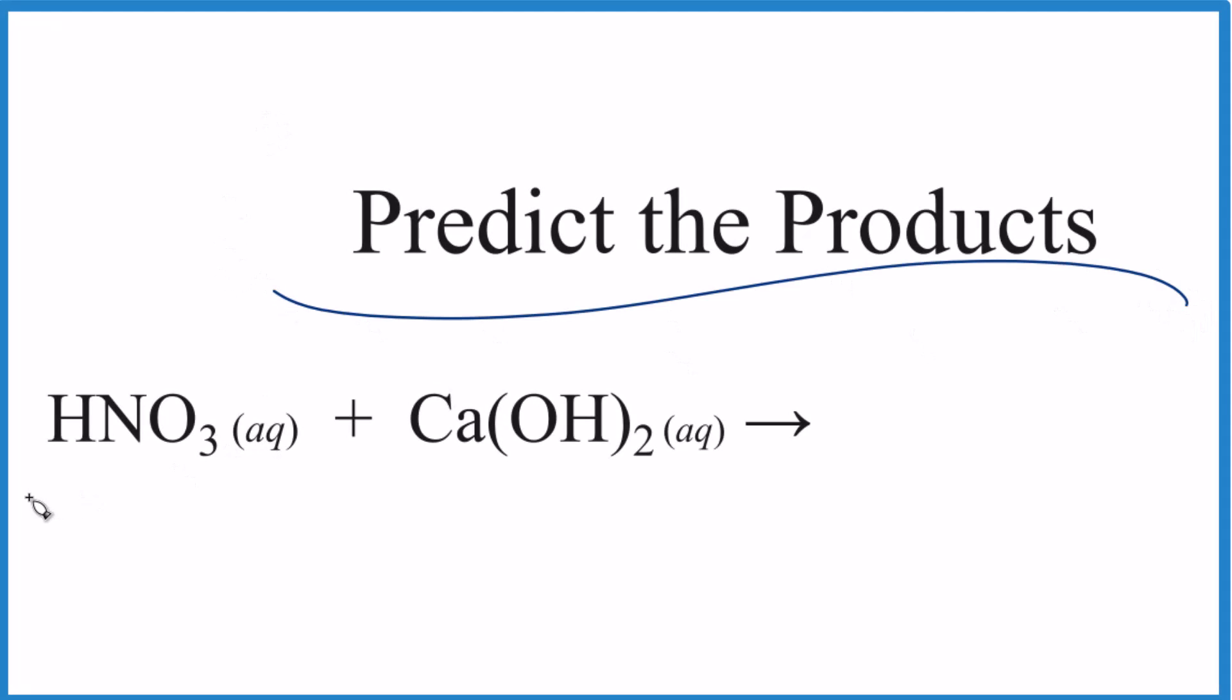Let's predict the products of HNO3 plus Ca(OH)2, nitric acid and calcium hydroxide. In order to predict the products, we need to be able to classify the reaction. Here we have an acid—it starts with H, that's a good clue it's an acid.